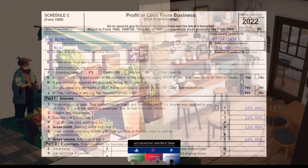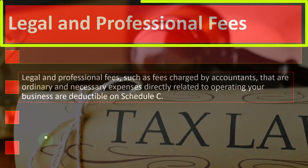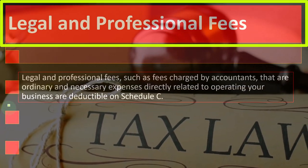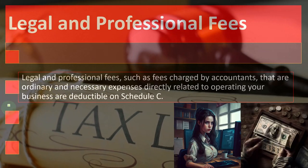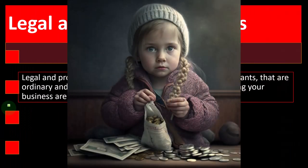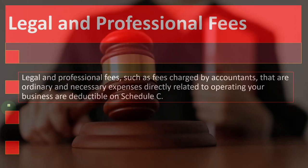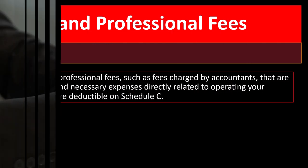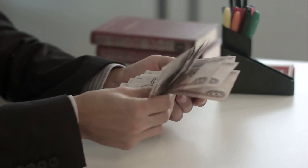We're focused on the expenses here, more specifically those related to legal and professional fees. Legal and professional fees such as fees charged by accountants that are ordinary and necessary expenses directly related to operating your business are deductible on Schedule C. Make sure to pay your accountant well, since you get to deduct those legal and professional fees. That makes sense because if the legal and professional work was for the purpose of your business, you would expect it to be ordinary and necessary and therefore deductible.